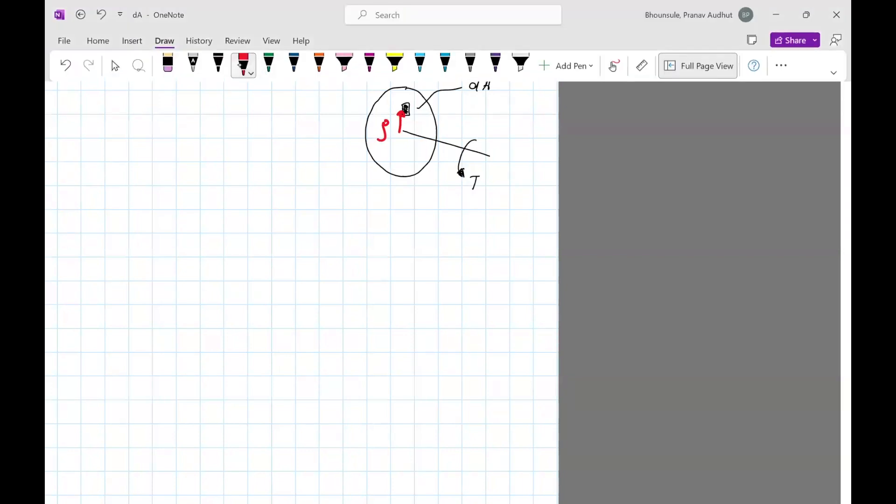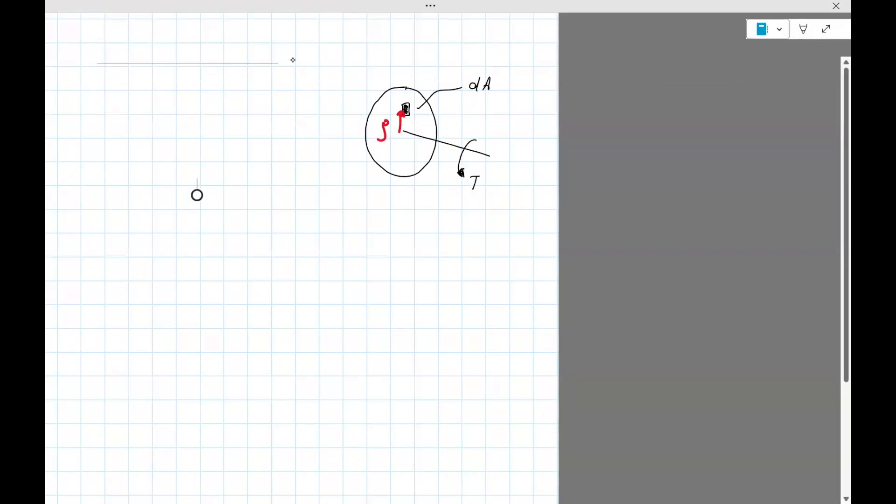So let's derive that. So consider the cross section of the shaft. Consider a small element of area dA. This is the torque. And then this area is, let's say, at a radius of rho. And because of this torque T, this area is subjected to a shear stress of tau, right? So that shear stress would be this way because of the torque. It's going to produce a counterclockwise sort of force.